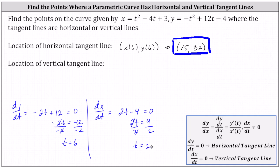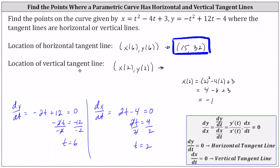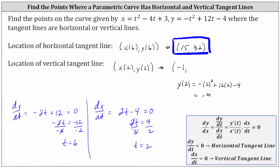This indicates the location of the vertical tangent line is the point x of 2 comma y of 2, which we'll now determine using the parametric equations. x of 2 is equal to the square of 2 minus 4 times 2 plus 3, which is 4 minus 8 plus 3, which equals negative 1. Now we'll determine y of 2. y of 2 is equal to the opposite of 2 squared plus 12 times 2 minus 4, which is negative 4 plus 24 minus 4, which equals positive 16.